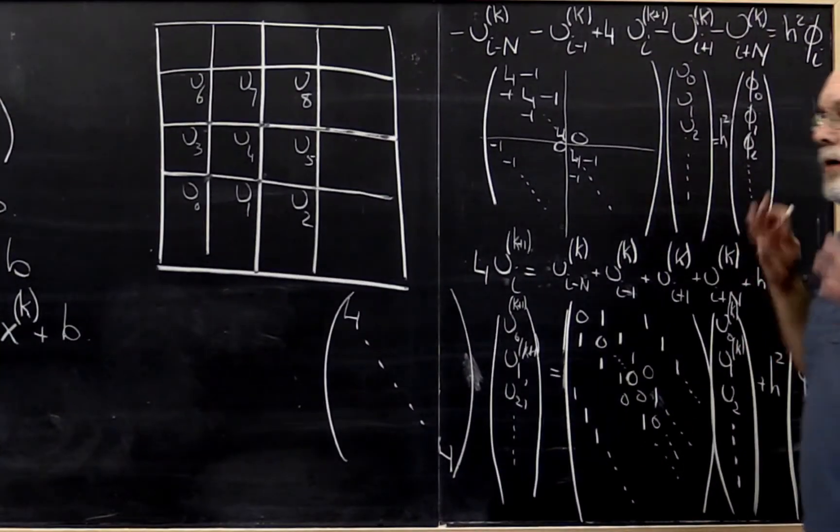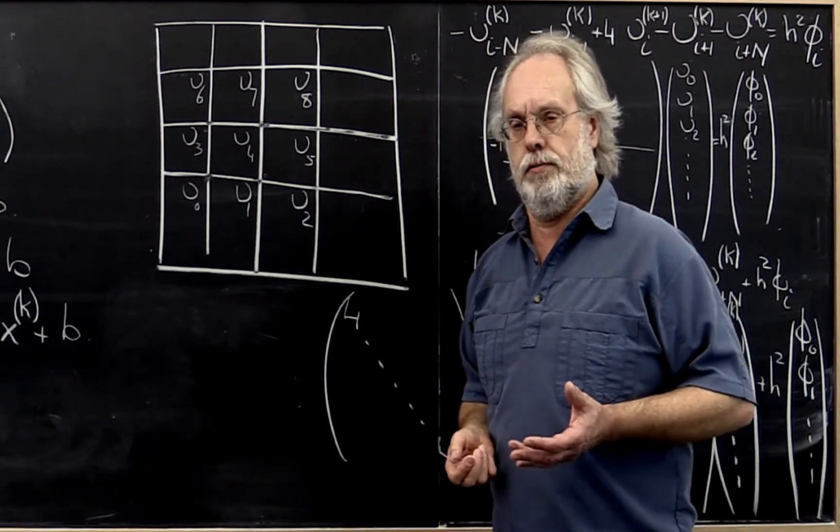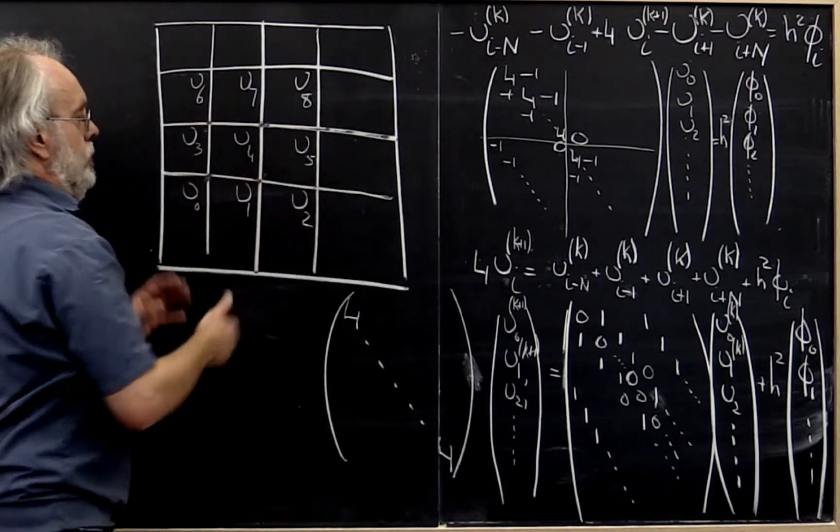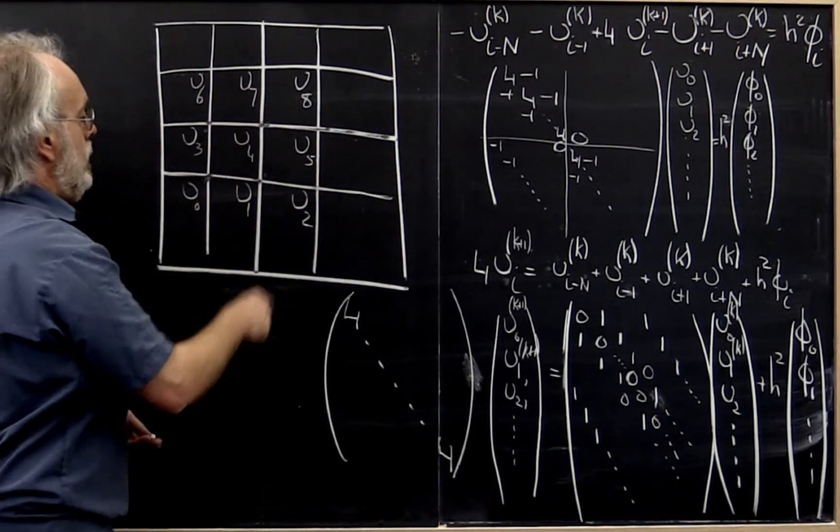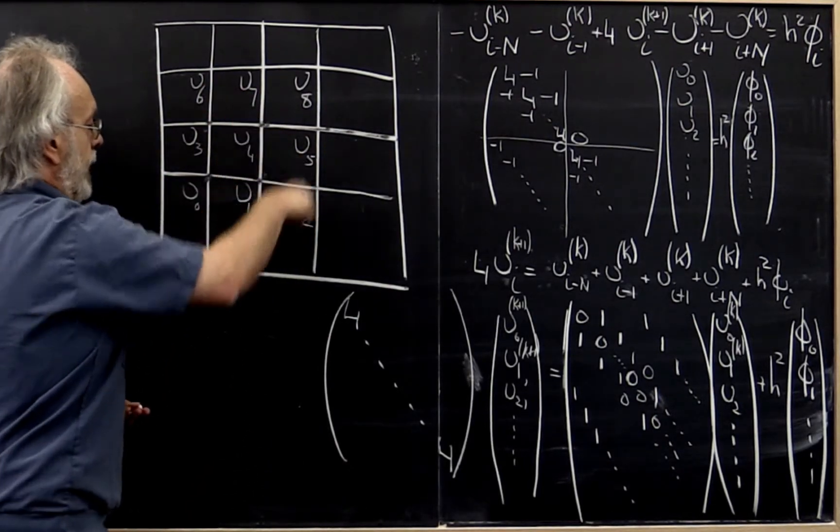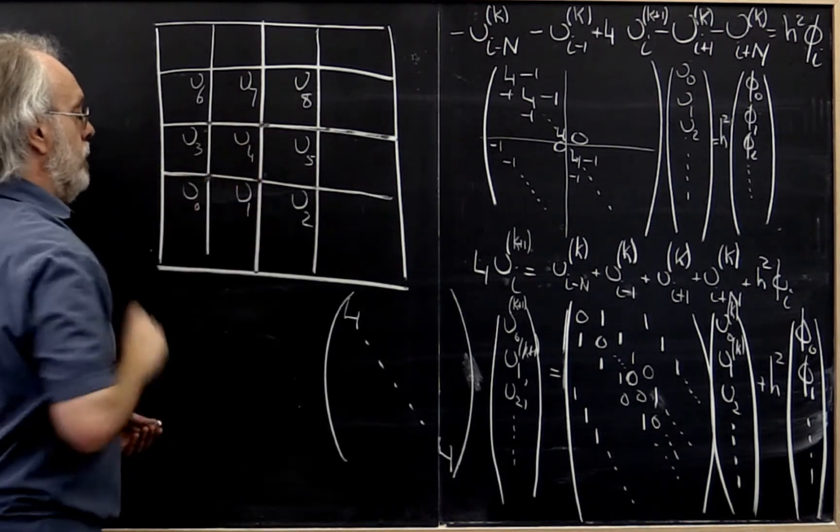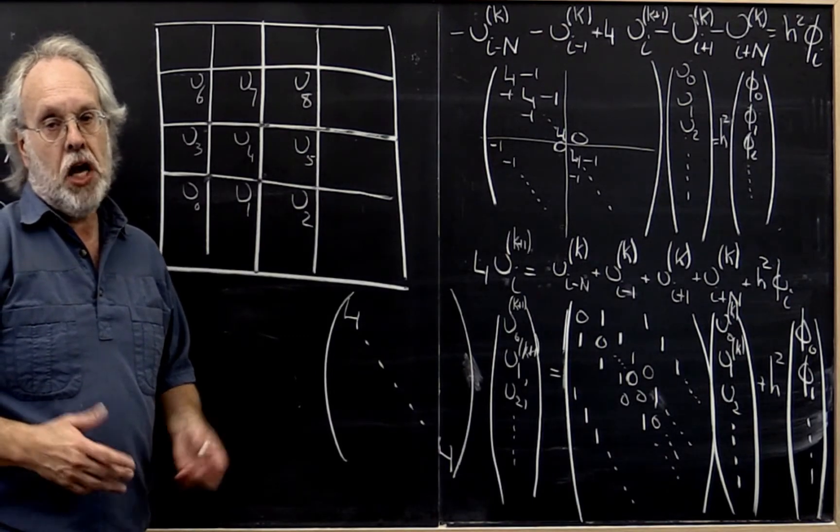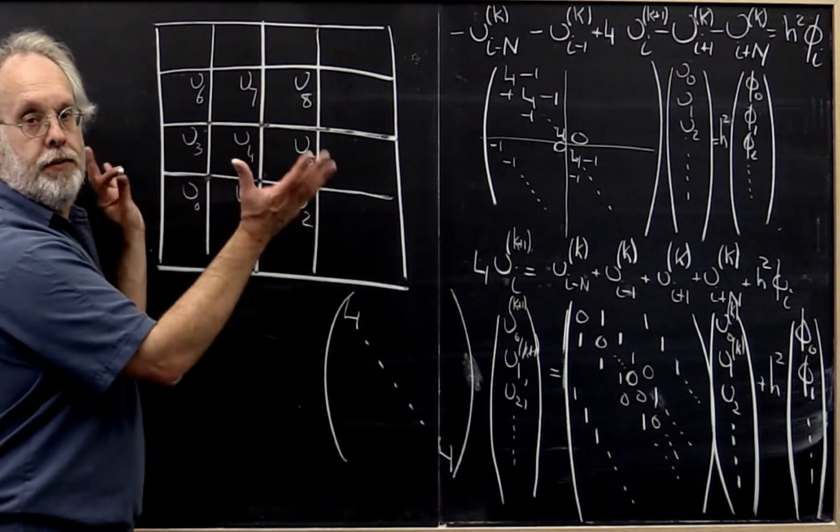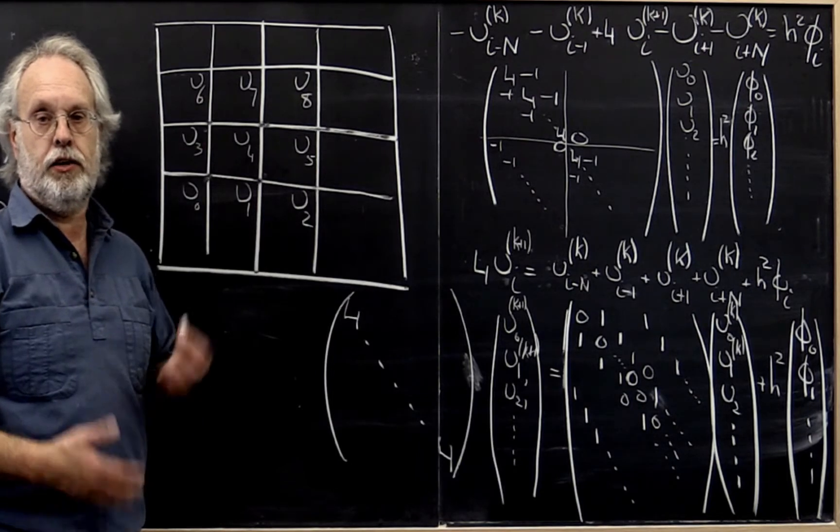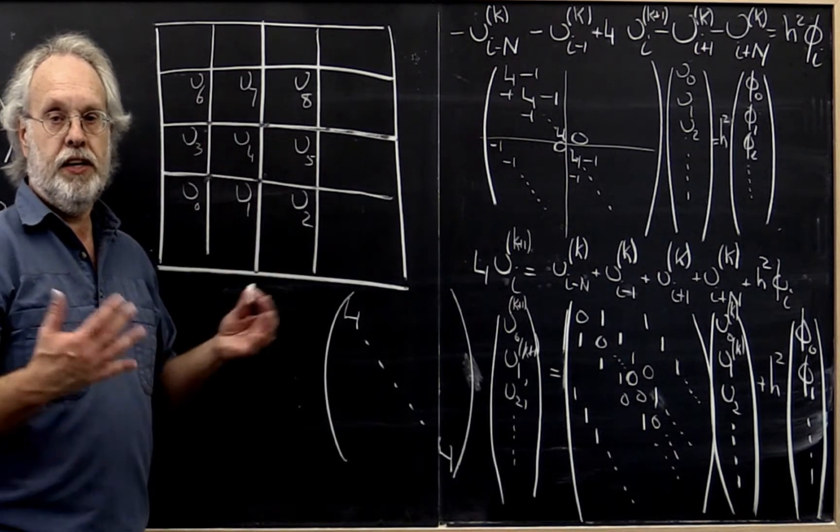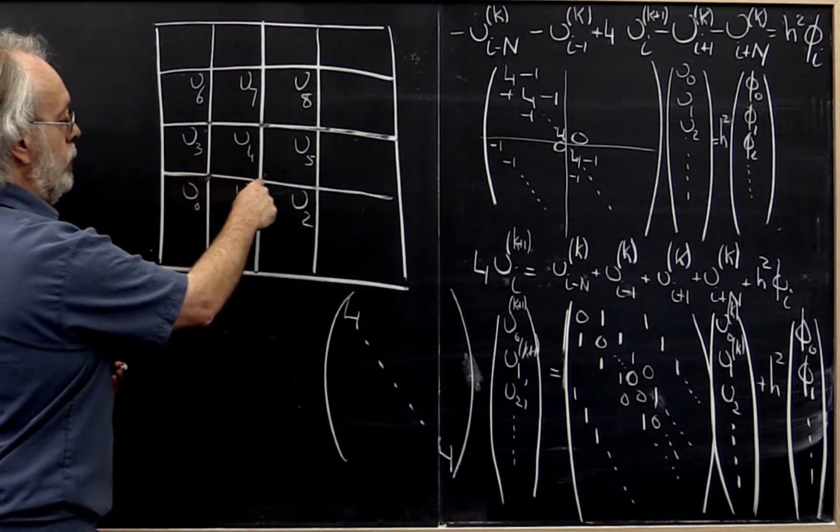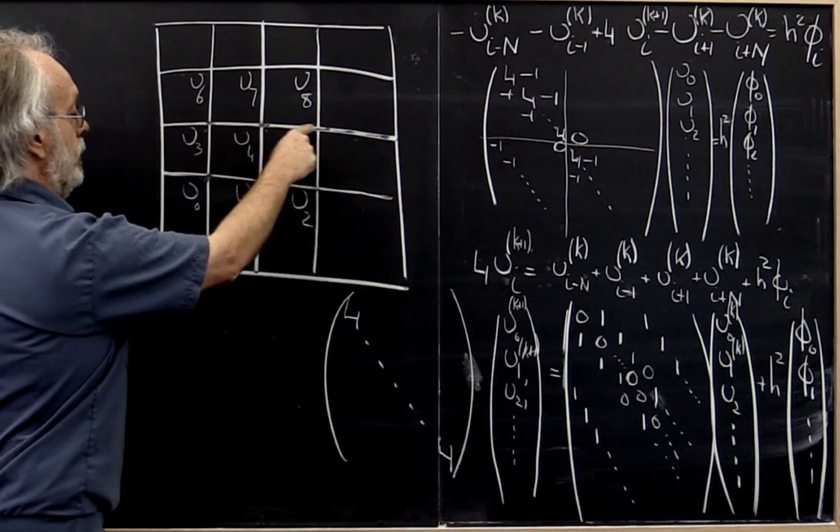Now let's think about how the Jacobi iteration went. What it said was take all of these values and replace them by taking the values around them, some linear combination of them to update them, and use the old values. Now it may be that you're on a computer where all of this happens simultaneously and then you get a lot of parallelism. But if you actually do it one by one then you'll end up updating this value and then this value and this value and then this value and so forth.